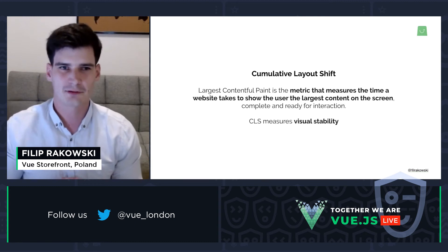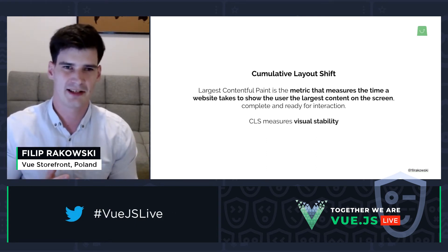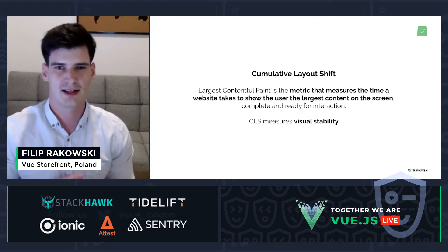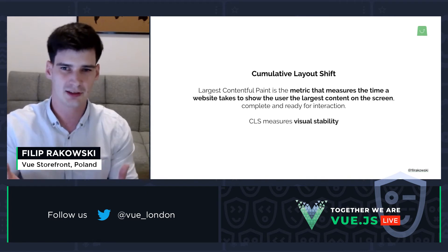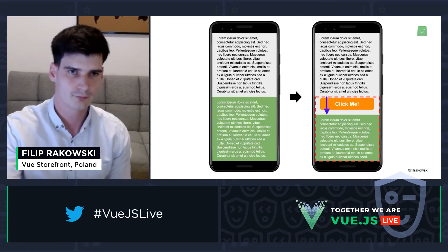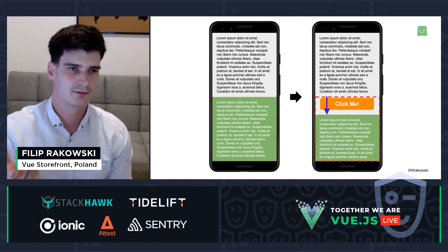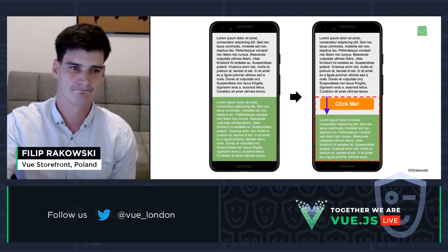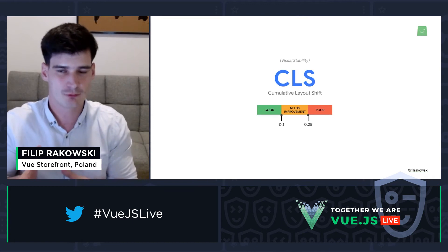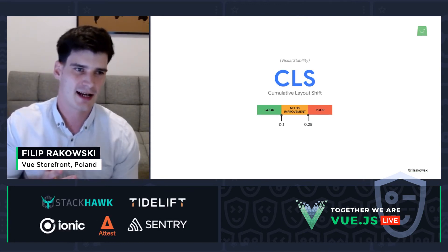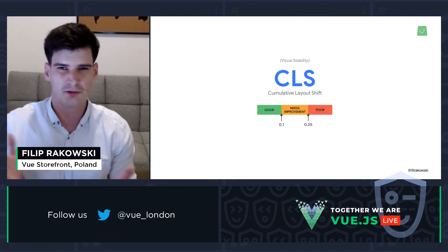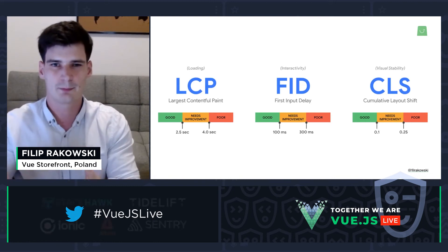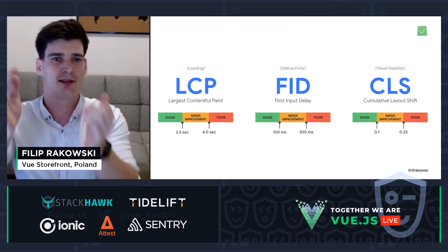Last but not least, Cumulative Layout Shift measures visual stability — it tells you if there are any changes in the layout during the loading process, like an image or text moving. CLS usually happens when you don't have placeholders for parts of the UI that load dynamically, like images in an image tag. A good CLS score is when less than 10% of your layout shifts during loading; above 25% is bad. The three Core Web Vitals together are a minimum set of quality signals for good perceived performance, measuring loading performance, page interactivity, and visual stability.